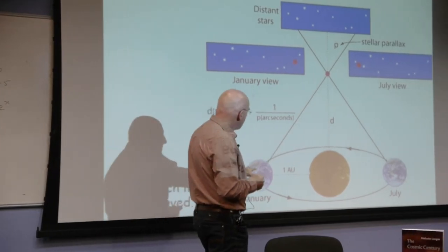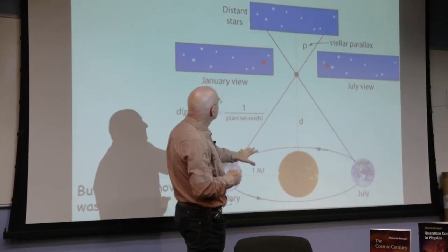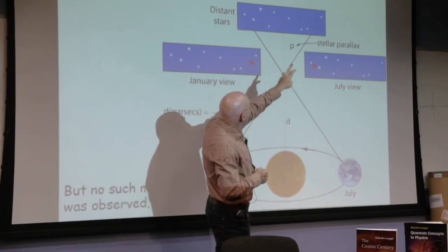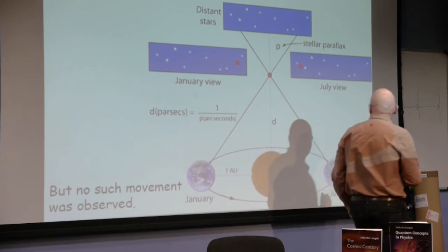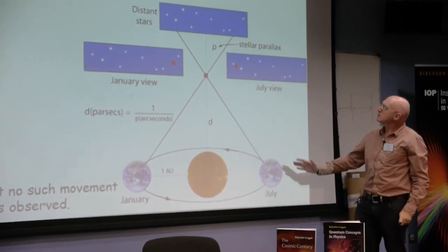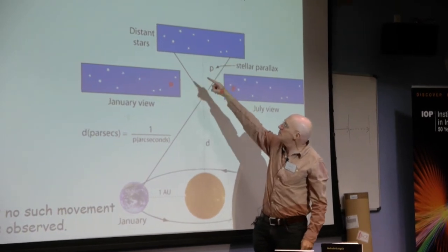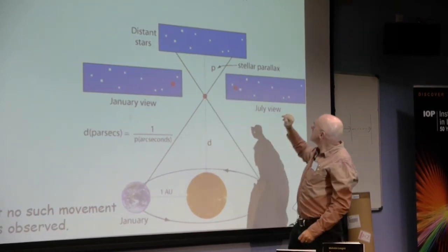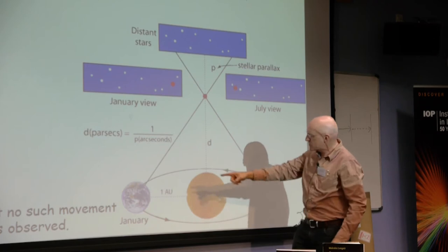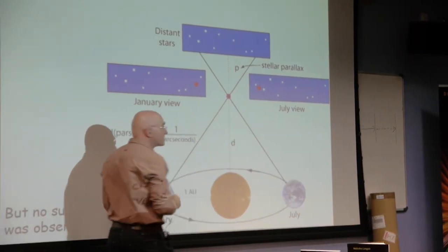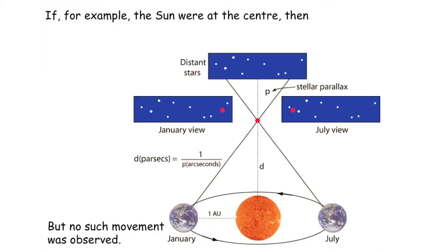In this particular case, if you imagine the Earth-Sun system, here's a nearby star which we can see against the background of more distant stars. In the summer you look at the star against this particular region of background stars, and then six months later the Earth has moved around and the position of the star appears to have changed just because of parallax. The Greeks thought if that was true you should be able to see that parallax.